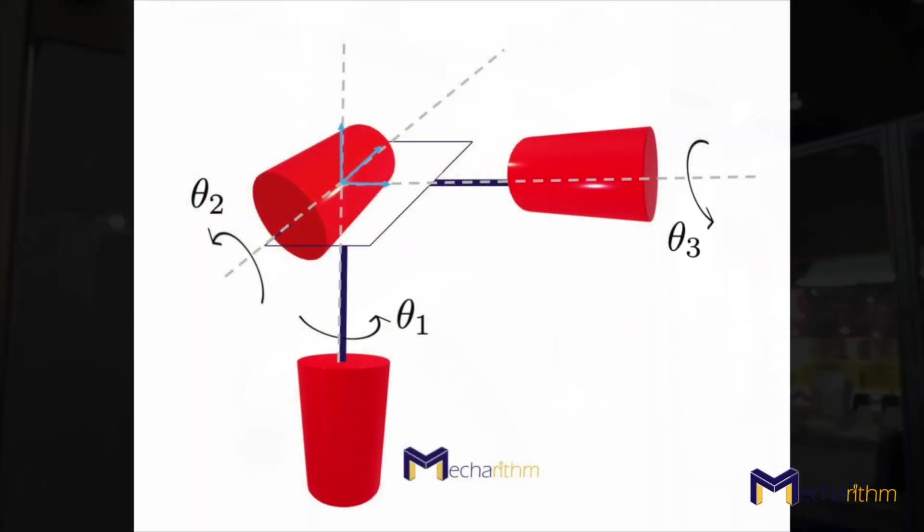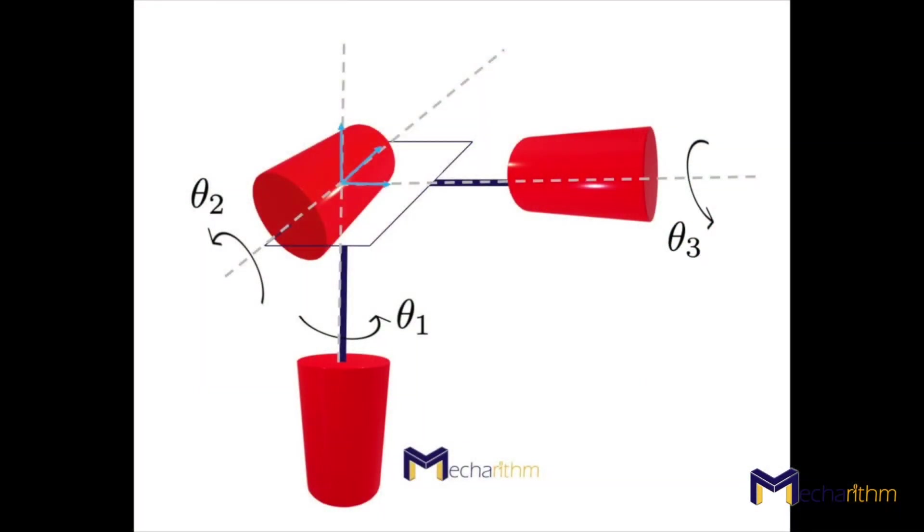Because the 3DOF spherical wrist has three revolute joints, the 3D configuration space or C space can be expressed as the Cartesian product of three circles or a three-dimensional torus. The workspace may be defined as the 3D space of orientations of the frame as the Cartesian product of the 2D surface of a sphere and the circle.